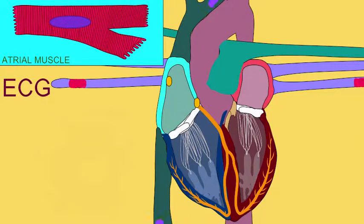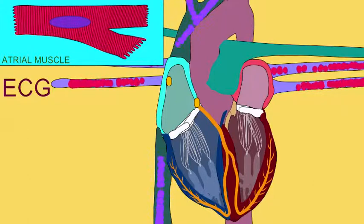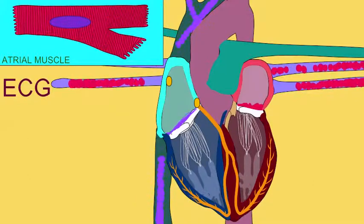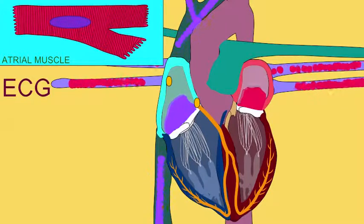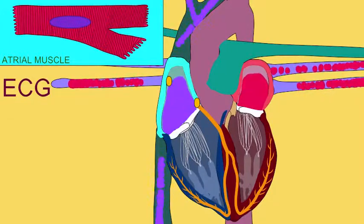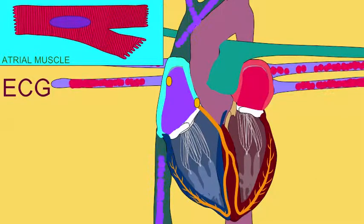Although all valves are closed, the AV valves open shortly after the T-wave of the previous cardiac cycle because the pressure of the blood that has accumulated in the atria is greater than the pressure in the ventricles, which are now in diastole and have emptied themselves.